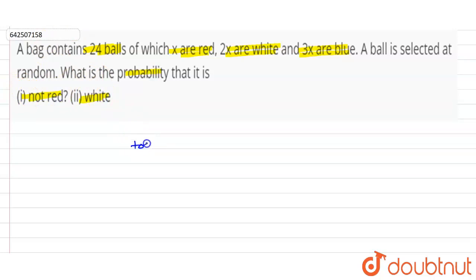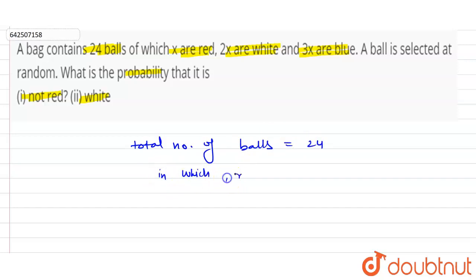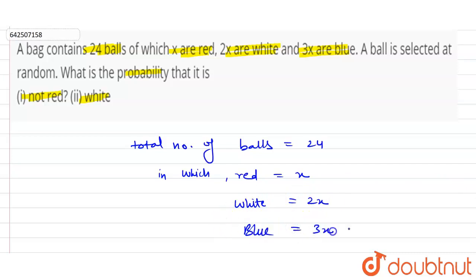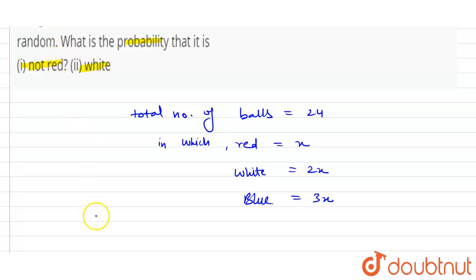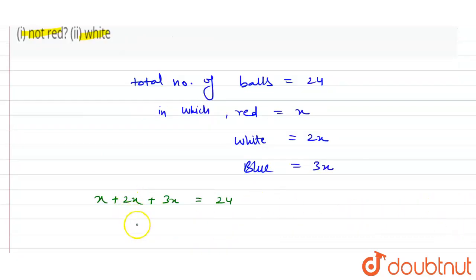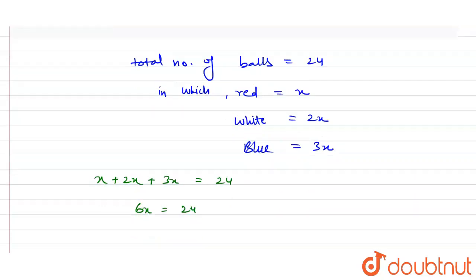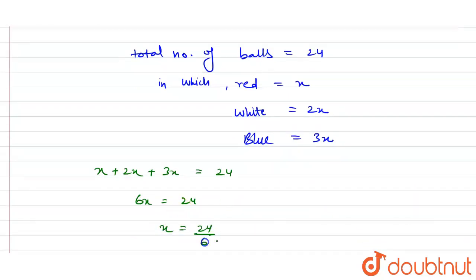Total number of balls equals 24, in which red balls are x, white balls are 2x, and blue balls are 3x. So if we add these balls: x plus 2x plus 3x equals 24. Now x plus 2x plus 3x is 6x, which equals 24. From here we get x equals 24 divided by 6, which equals 4.